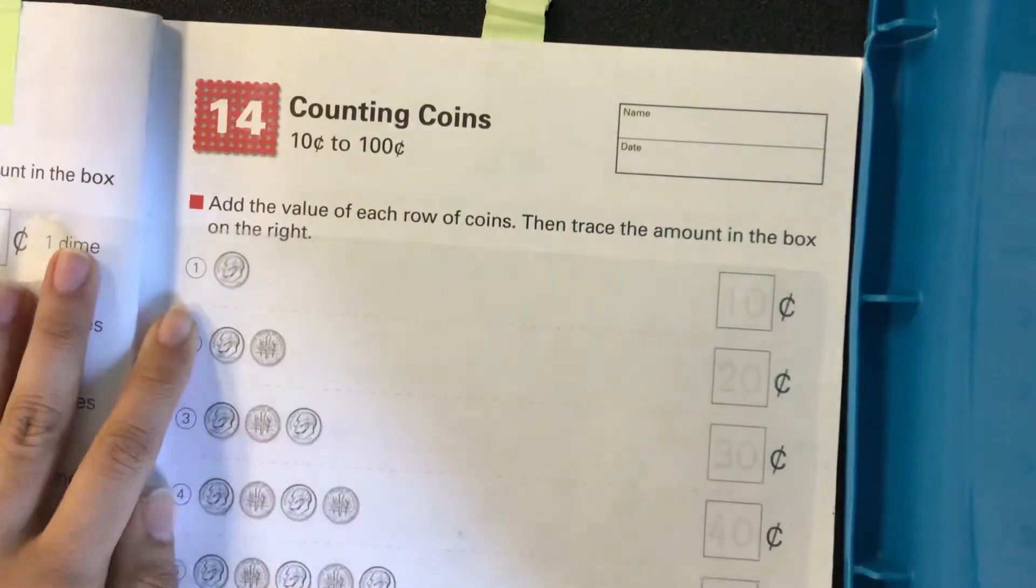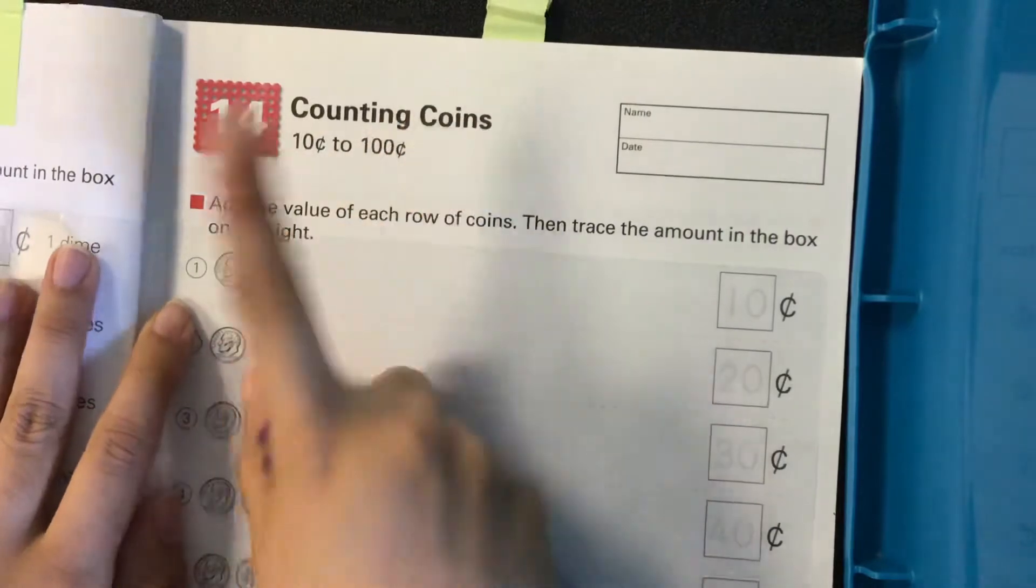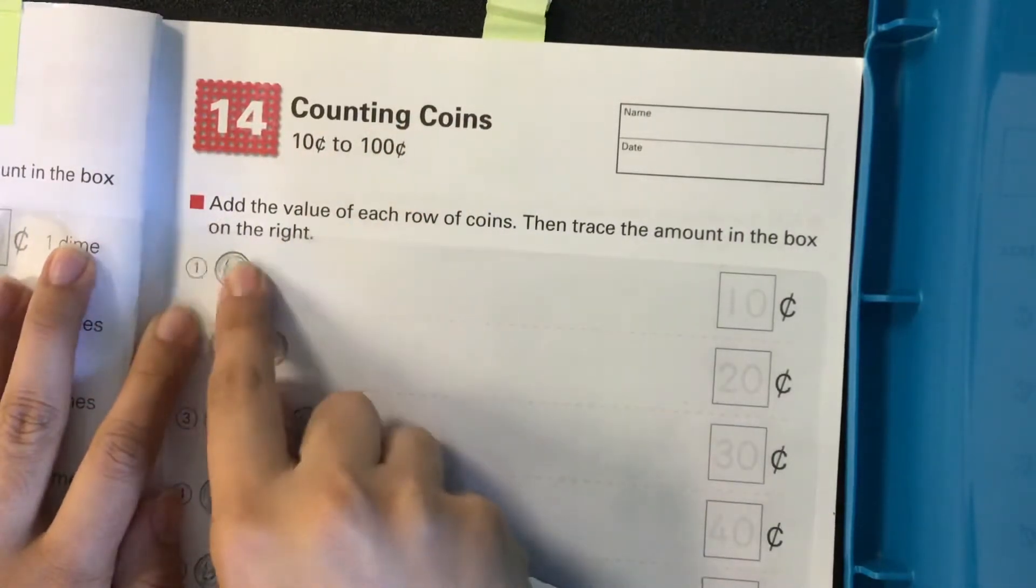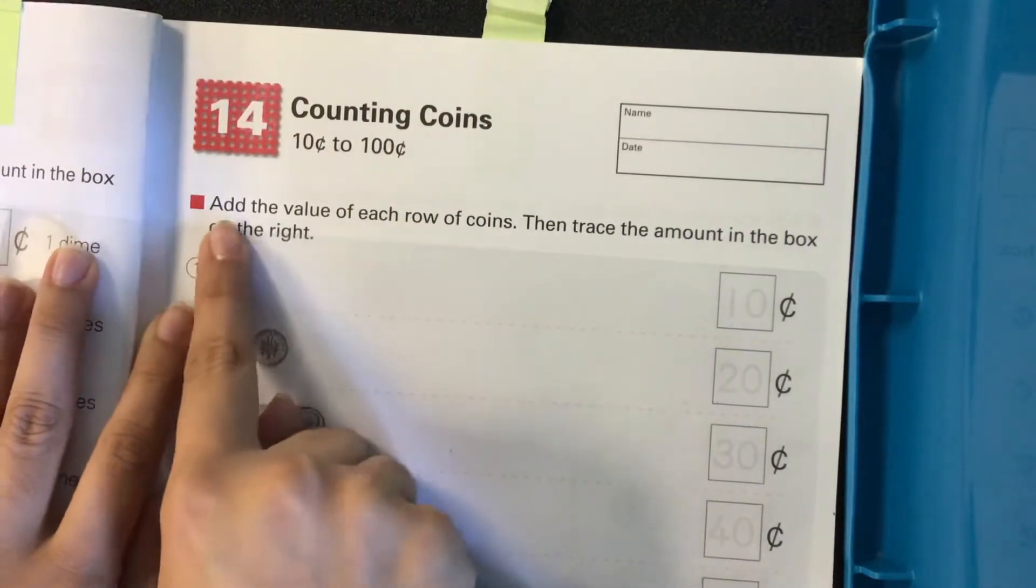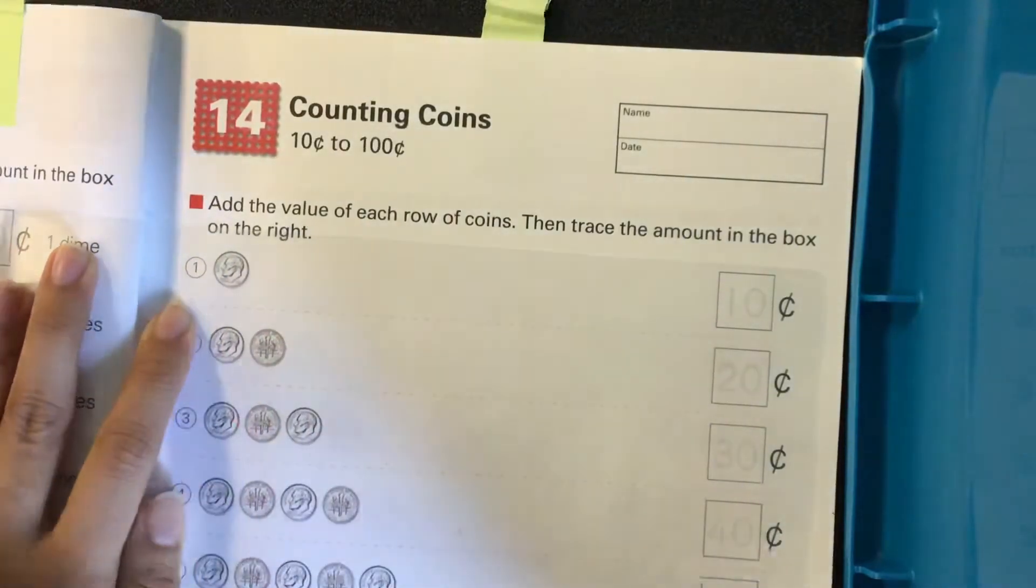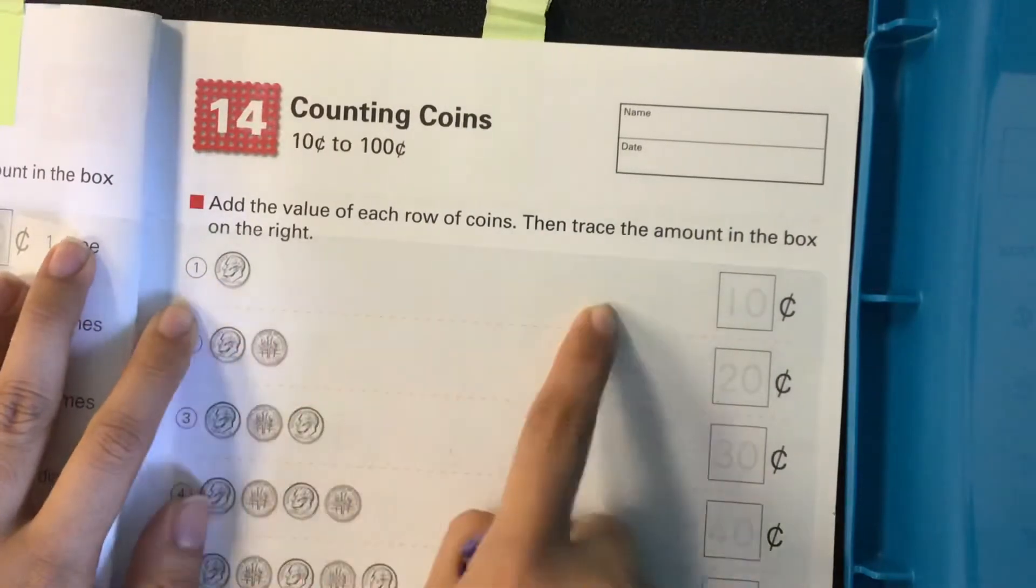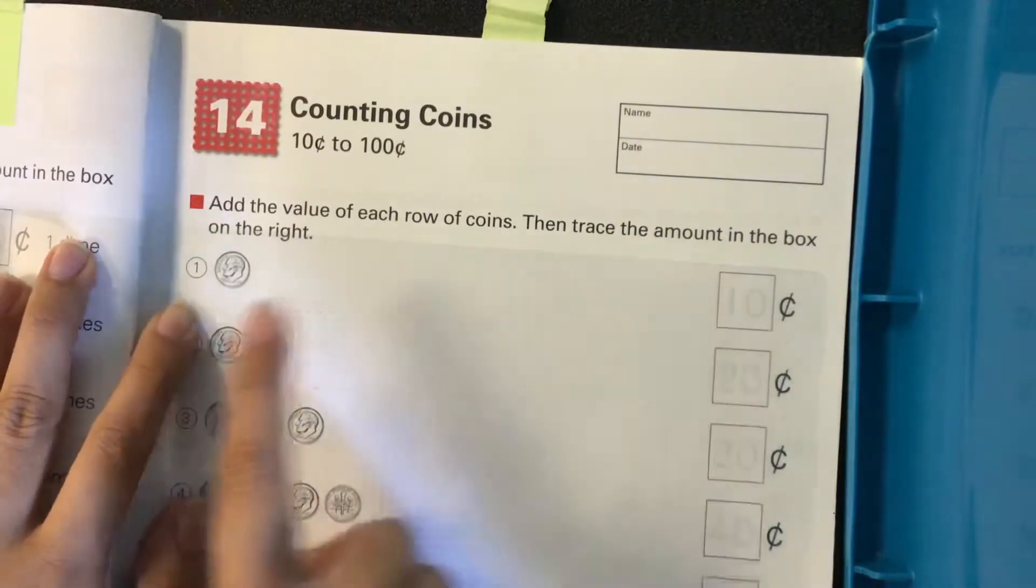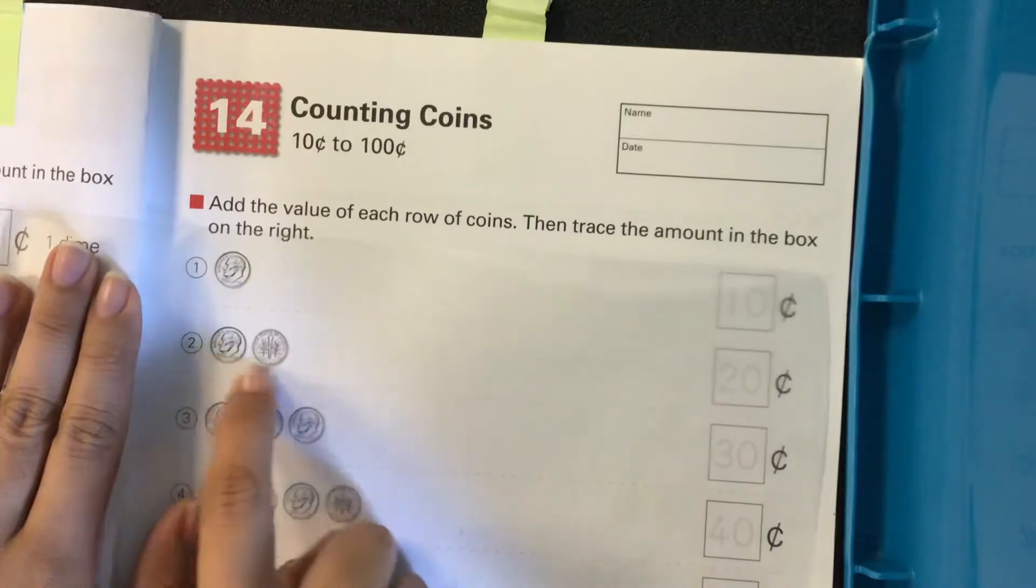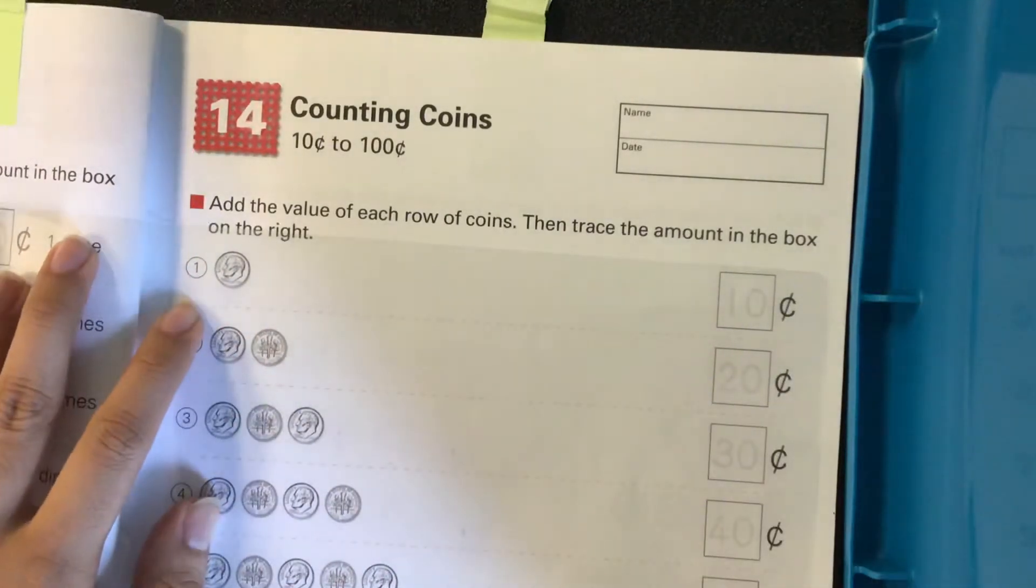Welcome to another SCC math video guys. Today we're going to be working on counting coins and we'll be working with the dime. So what we're going to do is we're going to add the value of each row of coins. We're going to add all the coins in row one and put the answer right there, add all the coins of row two and put the answer right there. Let's go ahead and get started.